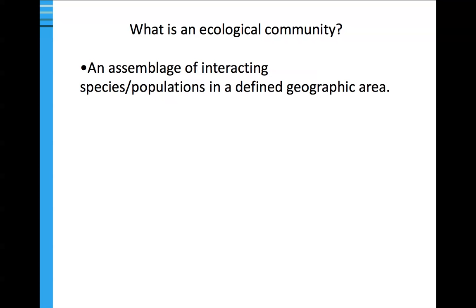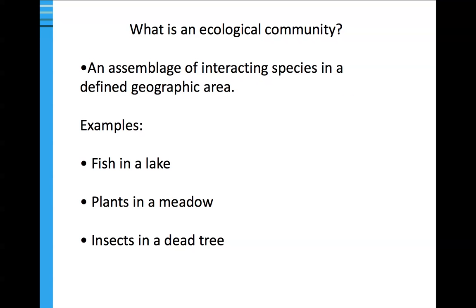So first, what is an ecological community? An ecological community is an assemblage of interacting species and populations in a defined geographic area, usually within a single trophic level. Examples include fish in a lake, all the plant species in a meadow, or insects in a dead tree or a group of dead trees.